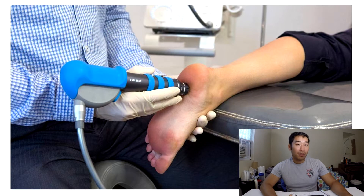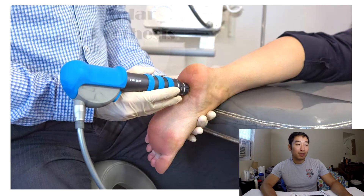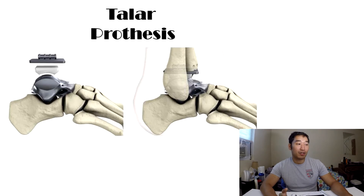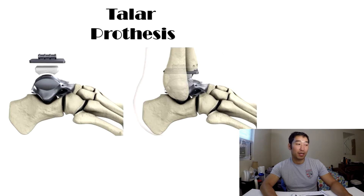Before getting to that, there is also talar prosthesis — basically 3D printing a talus for a patient and implanting it, just like any other implant such as a hip implant or knee replacement. There aren't many articles specifically on talar prosthesis because it's still technically challenging, and there aren't yet studies with a large enough population, but it is still an emerging option.